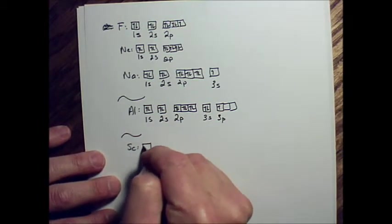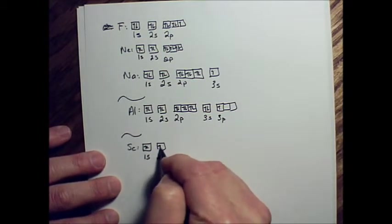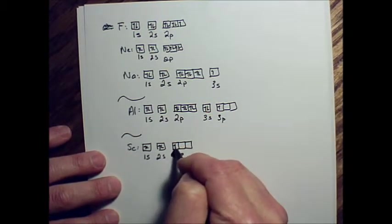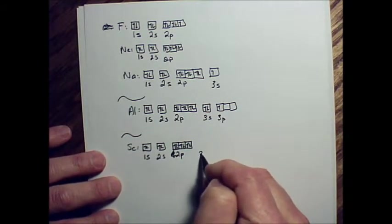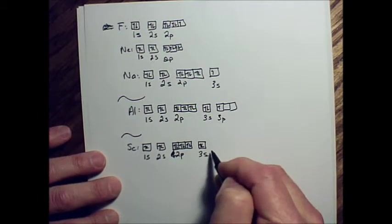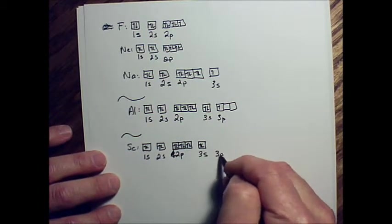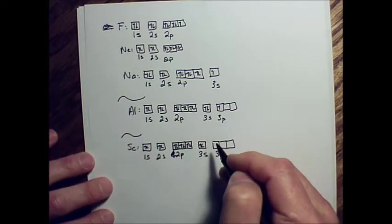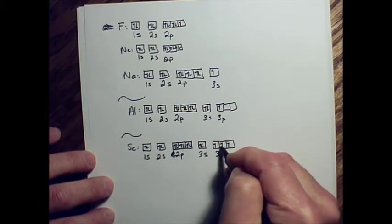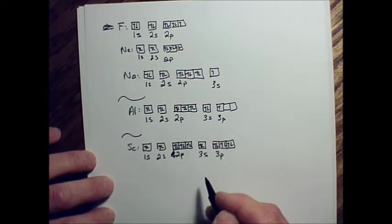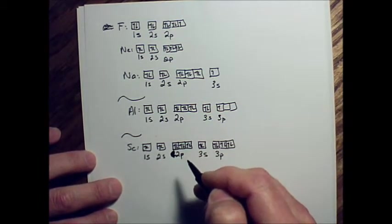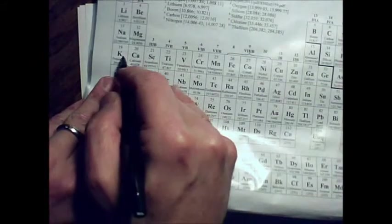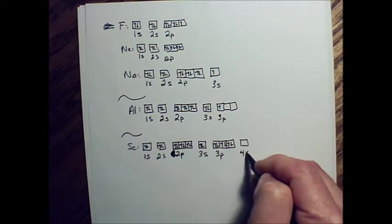So here we go: 1s, 2s, 2p. School bus rule: 1, 2, 3, and go back and pair them up. 3s. School bus rule: 1, 2, 3, and then go back and pair them up. So now we're going to go to the fourth row. So we're about to start where potassium is here. So that's 4s. Alright. Now, screeching halt.